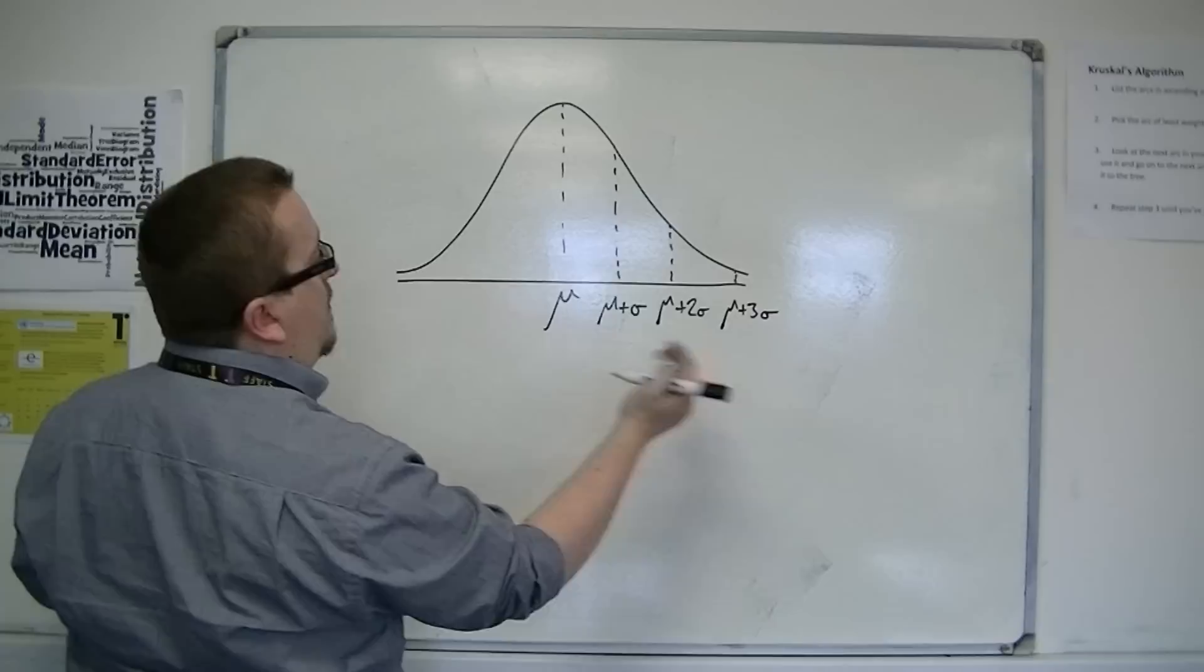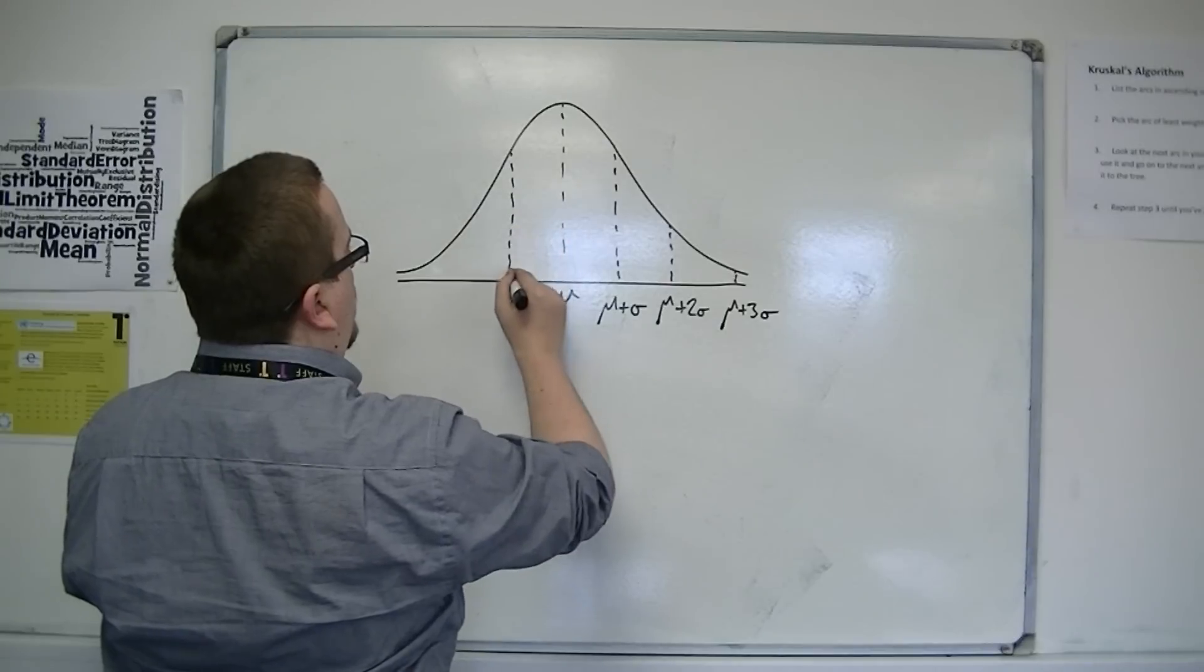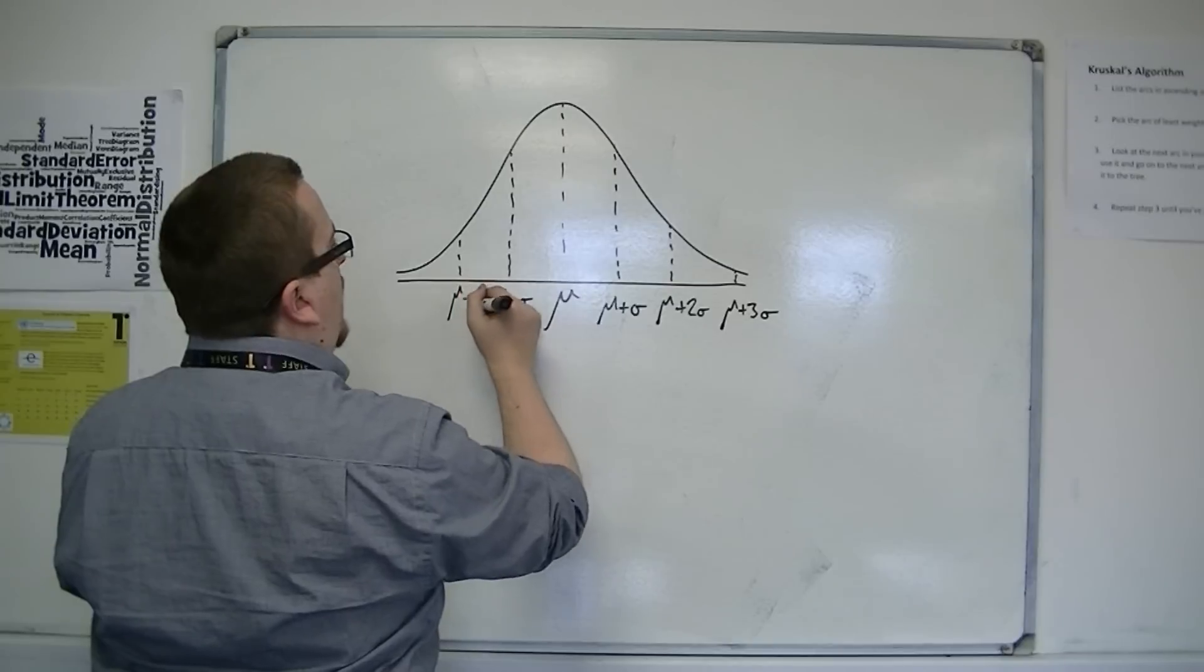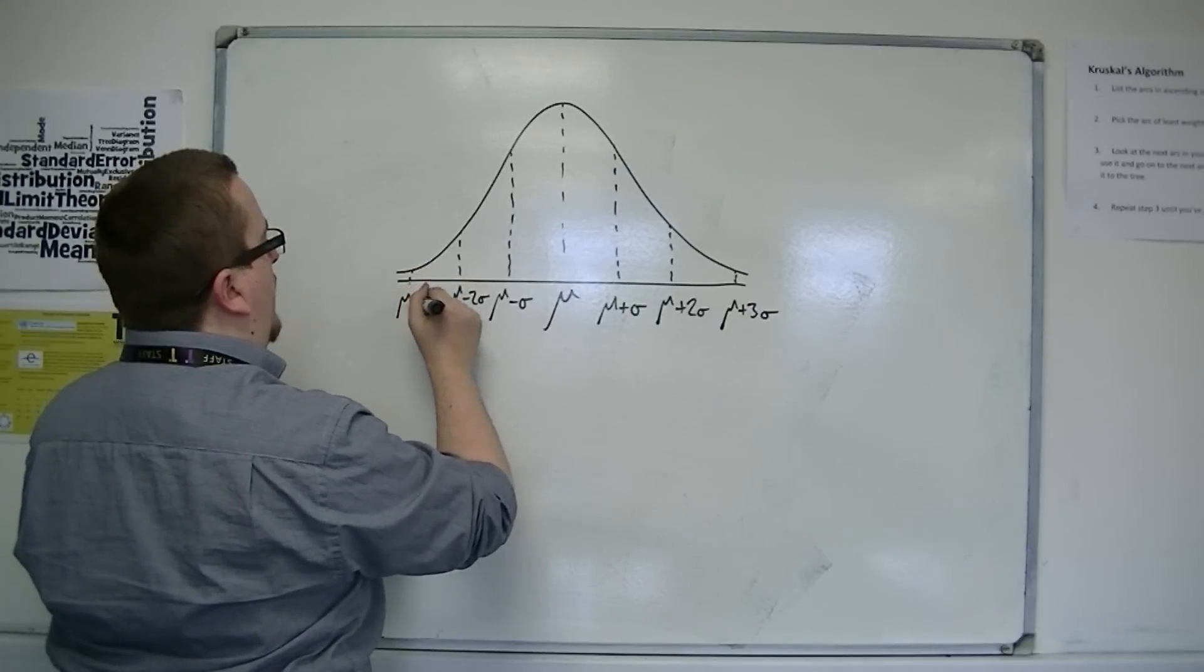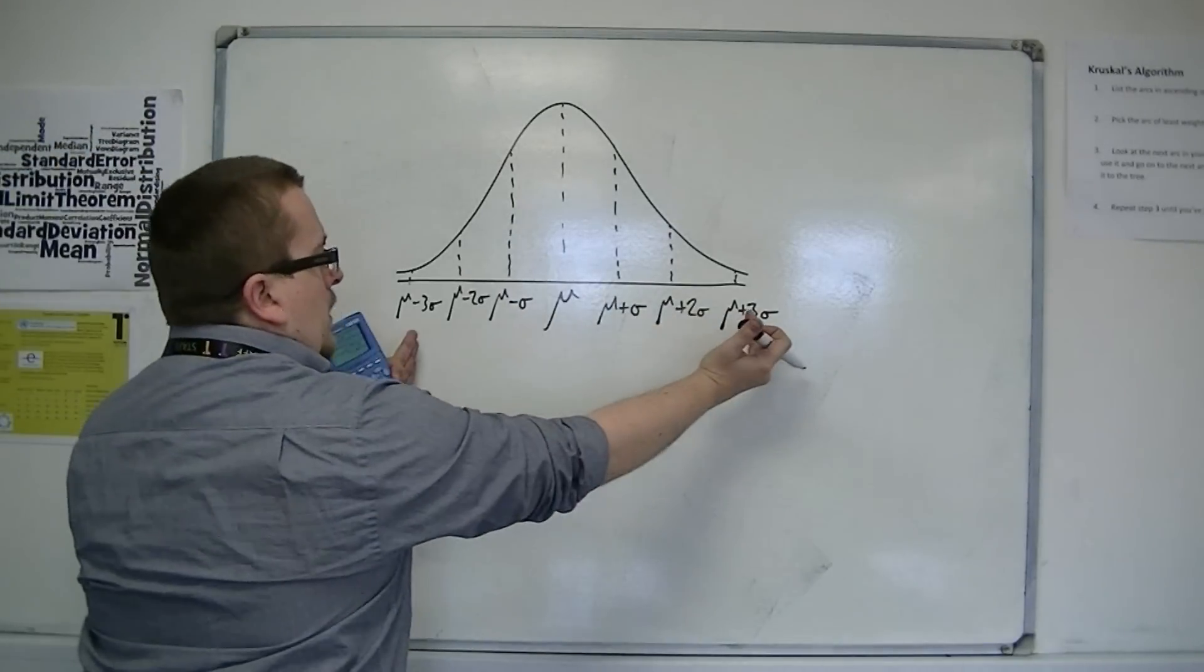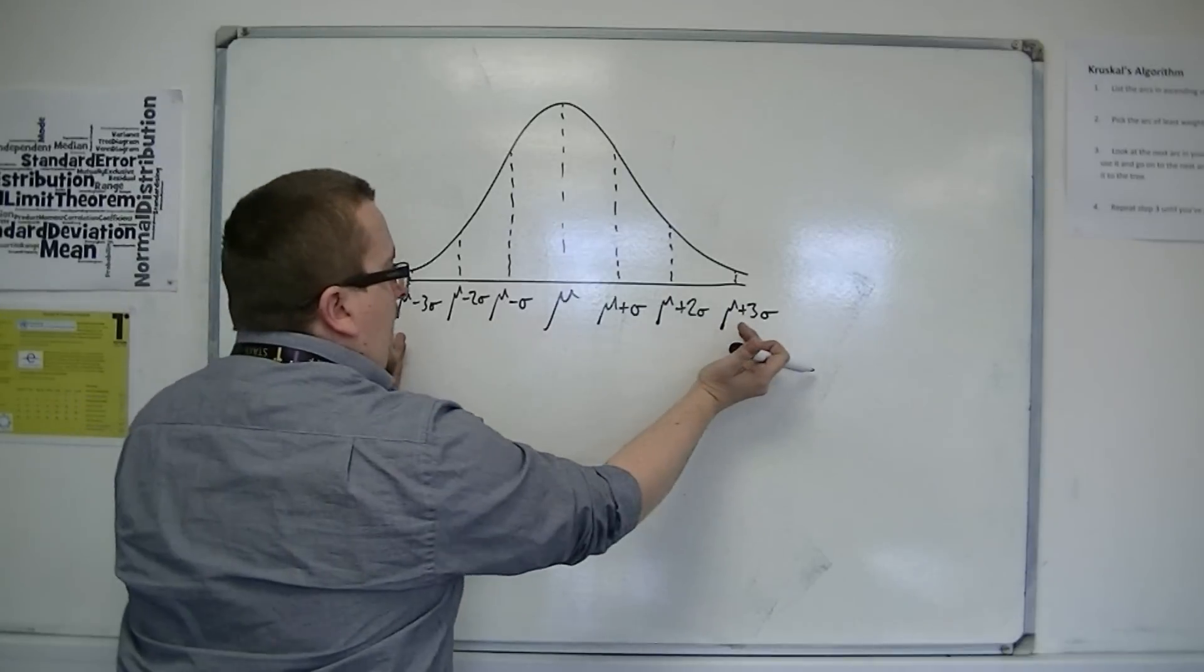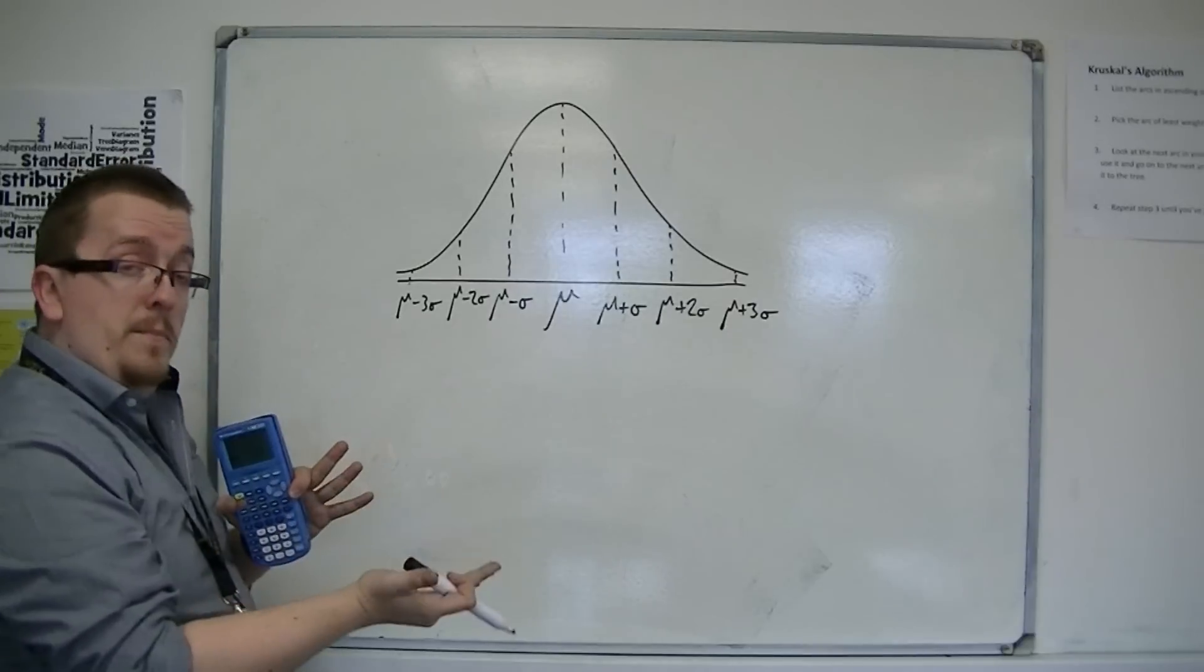And I'd do the same in the opposite direction, try and get these roughly equal. So mu take away sigma, mu take away two sigma, and then finally mu take away three sigma. And so what we can see is that the majority of the people in the population is between three standard deviations either side of the mean.